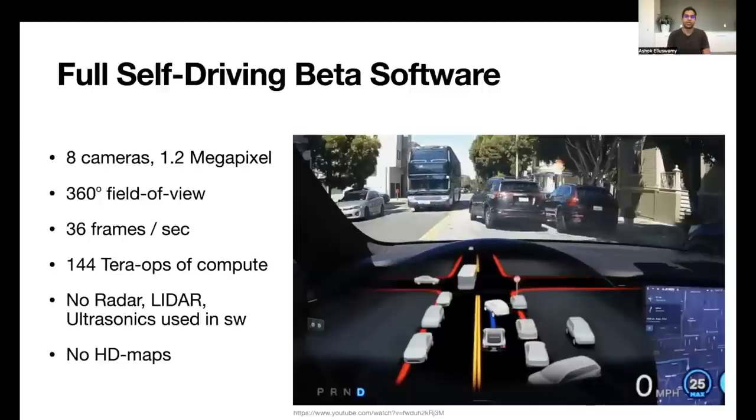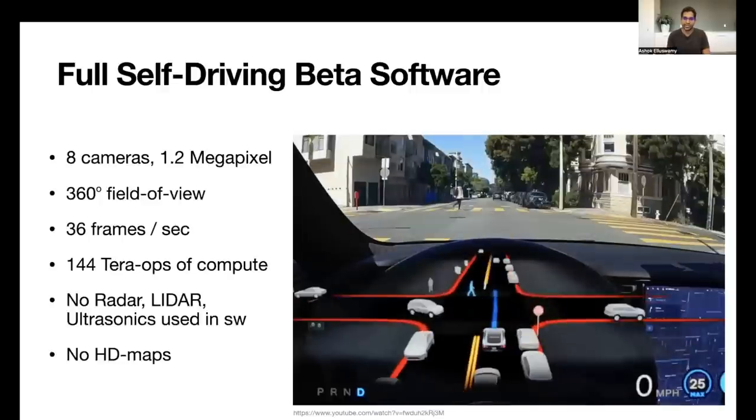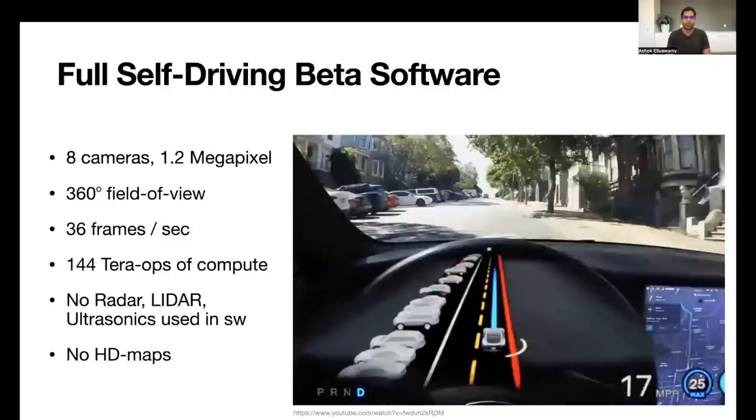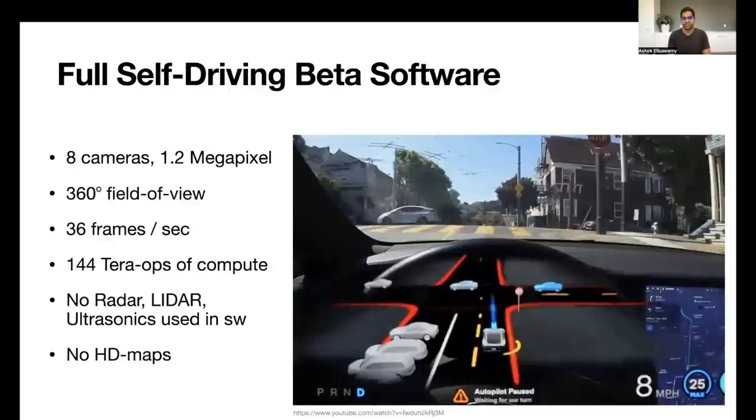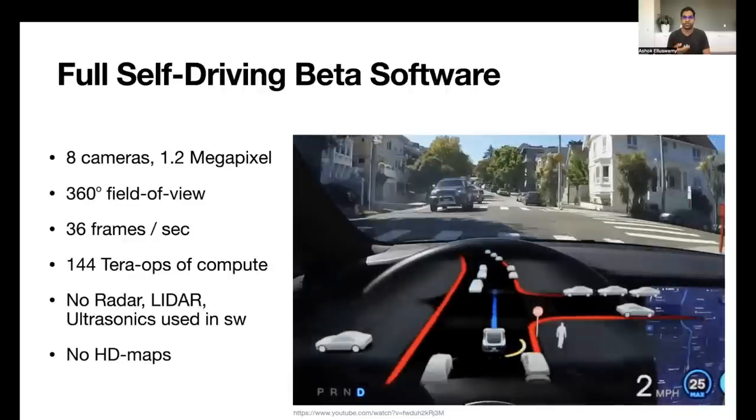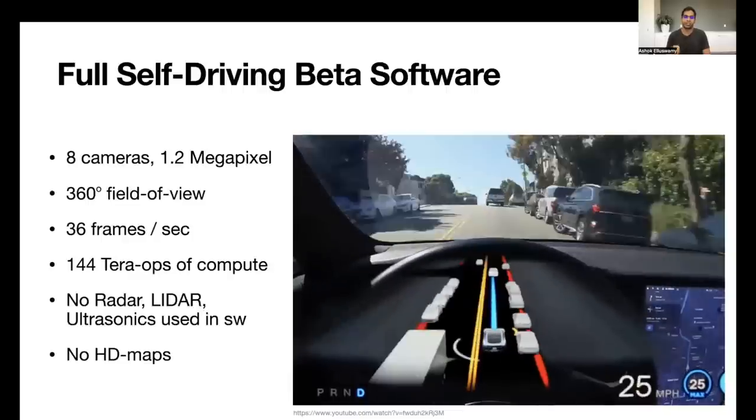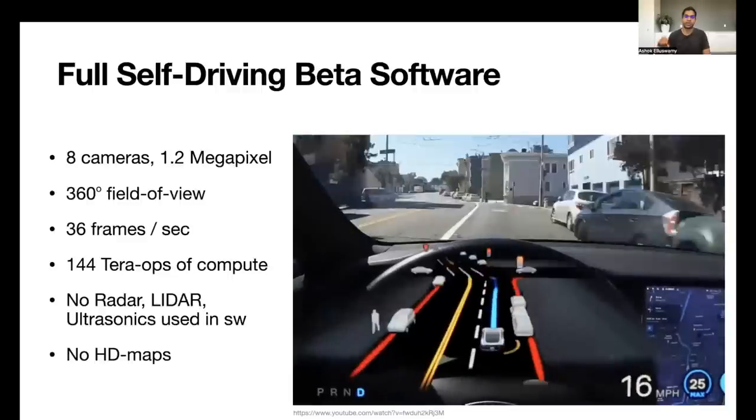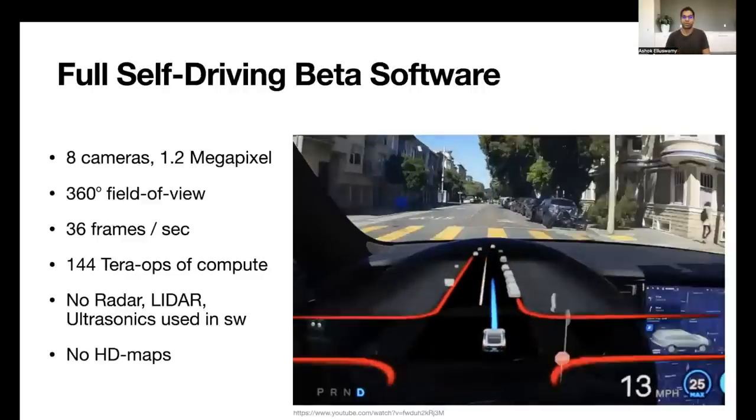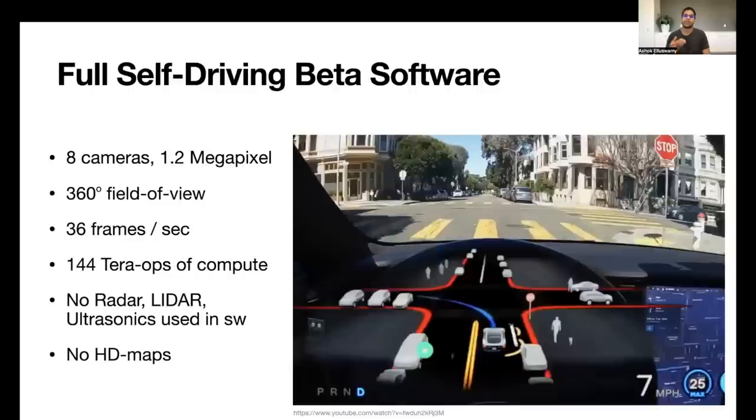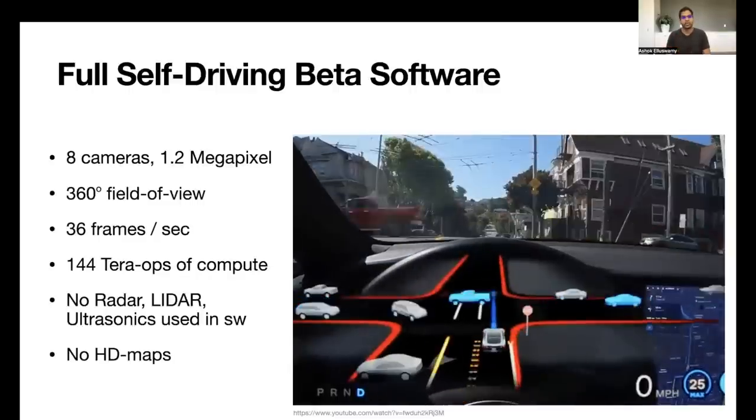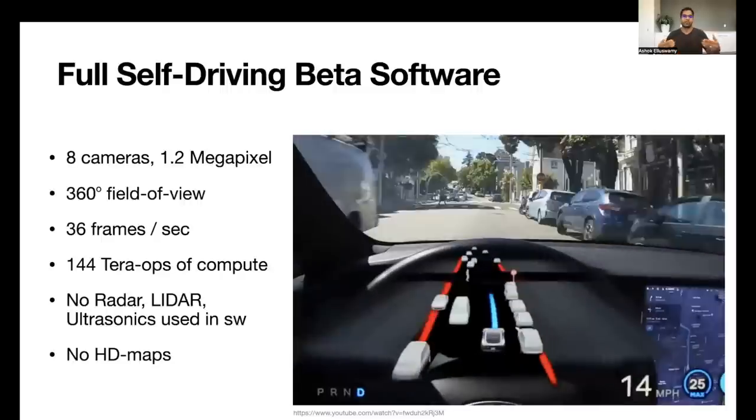Here I'm showing a video recorded by one of our customers driving around in dense San Francisco neighborhoods. All of the things that you're seeing here, such as the road boundaries, the lane lines, vehicles, including their position, orientation, velocity, all of it is produced by running algorithms and neural networks on our onboard computer that consumes eight 1.2 megapixel cameras. These cameras produce image streams at 36 frames per second and in total give full 360-degree coverage around the car.